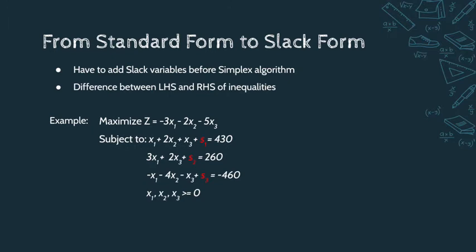Now we have to bring it into slack form, where we add slack variables to turn the inequalities into equalities. This ensures that the constraints will have a definite answer. As you can see here, in the inequalities, we added three separate slack variables — S1, S2, and S3 — to turn them into equalities.